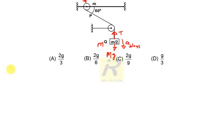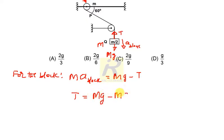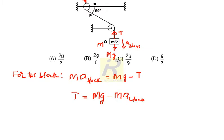So now, what I use here, for the block, I simply write, the net force which is acting downward is M a block that must be equals Mg minus T. T is the tension in the thread which is acting upward. How we can write for an expression for T? So T is equal to, it is Mg minus M a block. So this is how I can easily write.